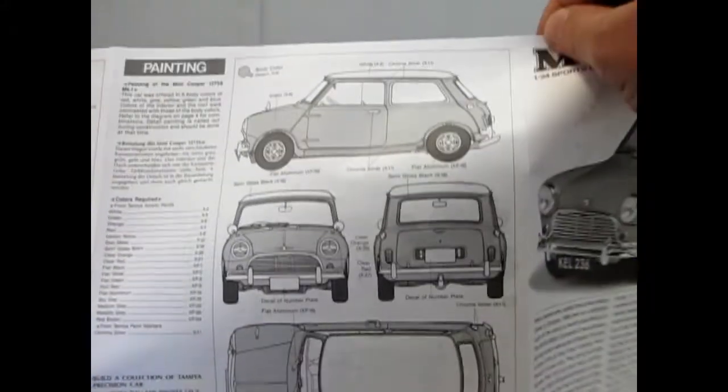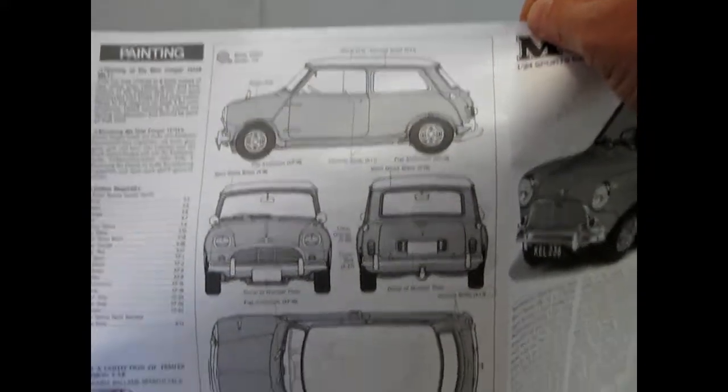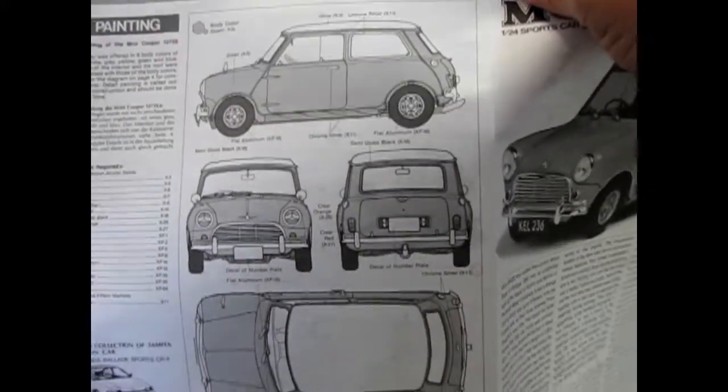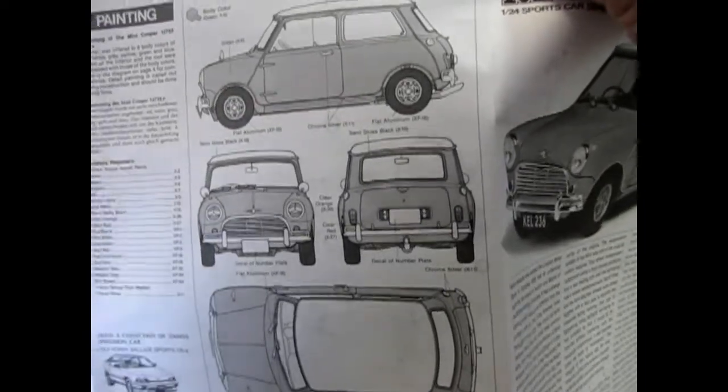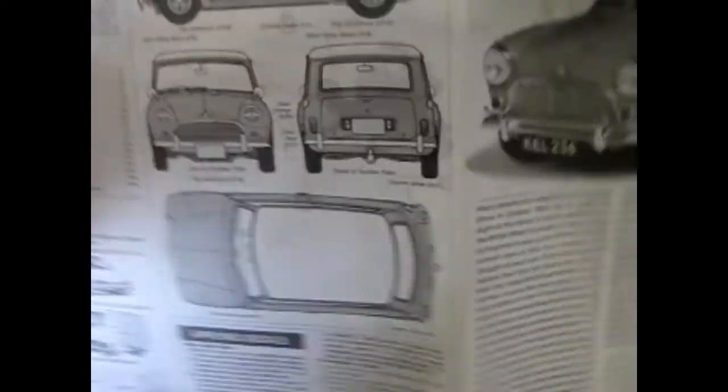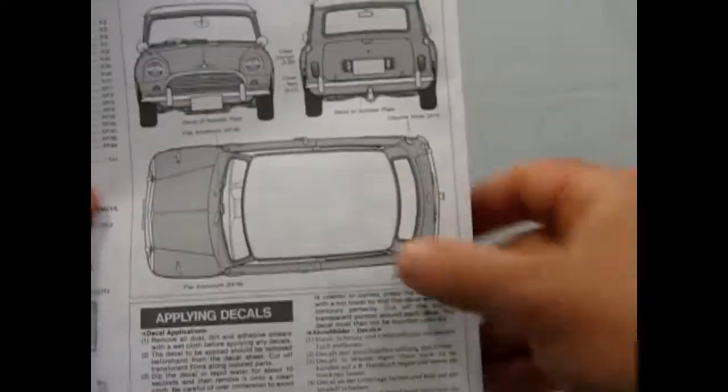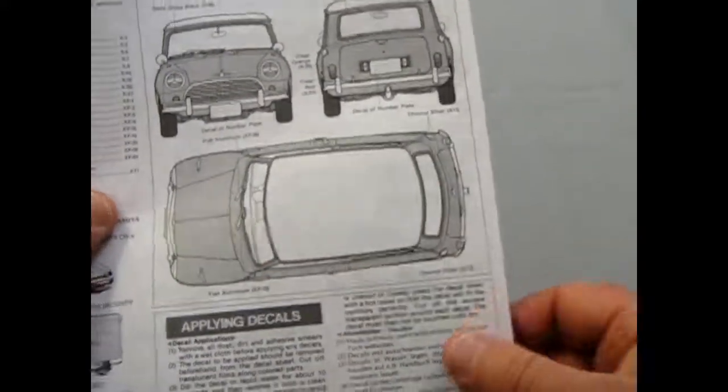And then at the back here it gives you some of the chrome locations and paint and whatnot for your Mini. It just does not have that nice British flag on the top but that's okay. So now let's take a look at how Tamiya made this model.